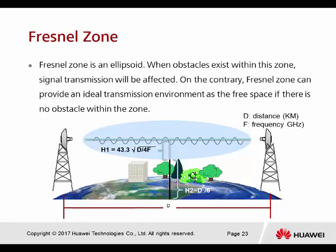Finally, the Fresnel zone — the elliptical area shown in the figure around the signal path. The Fresnel zone is mainly used for outdoor AP deployment projects. When planning such deployments, we need to calculate the distance between two antennas, the height of the antenna, and the required antenna gain — these are all factors to consider when deploying outdoor APs.